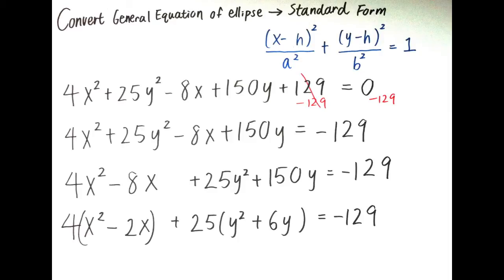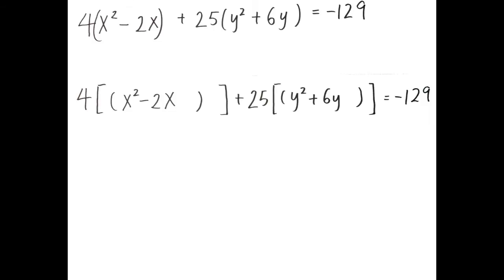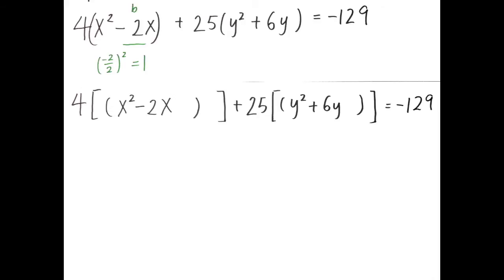4x squared minus 8x factors into 4 times (x squared minus 2x). And 25y squared plus 150y factors into 25 times (y squared plus 6y), equal to negative 129. We need to complete the square for the x and y expressions, so we need to first find c. The b of the x equation is negative 2, so c is (negative 2 divided by 2) squared, which equals 1.